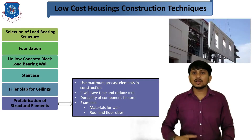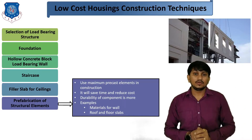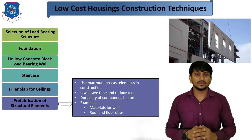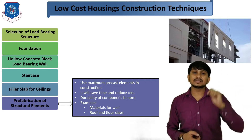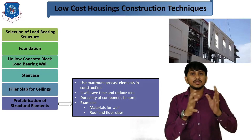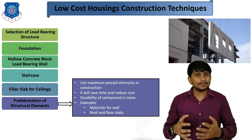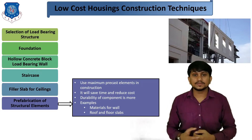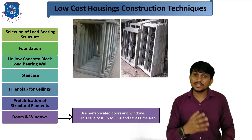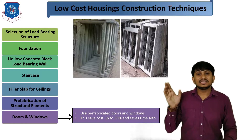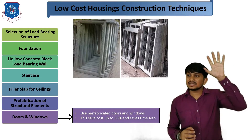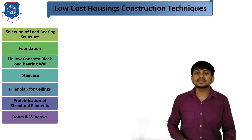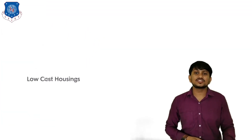The next technique is use of prefabrication of structural elements or precast elements. Maximum use of precast elements reduces the overall cost of construction, saves time, and increases quality because these precast components are constructed at a particular site under favorable conditions. Examples of precast components include walls, doors, and windows. Doors and windows can also be used as precast members. This saves cost up to 30% and saves time also. These are the various techniques which can be used while constructing low-cost housing.